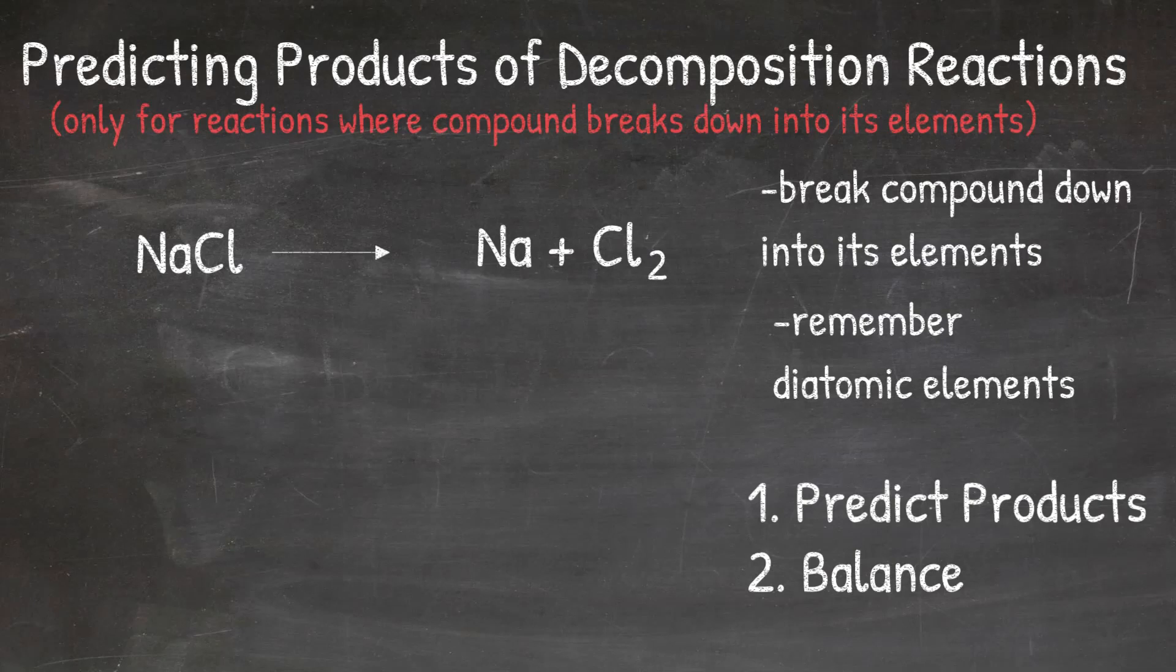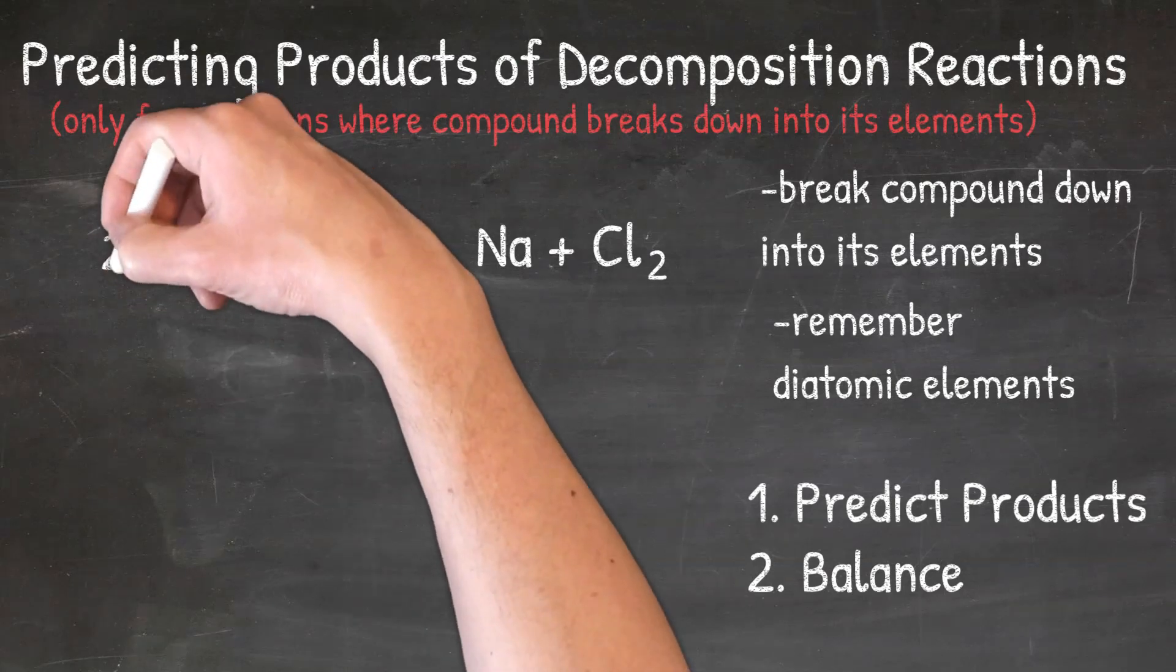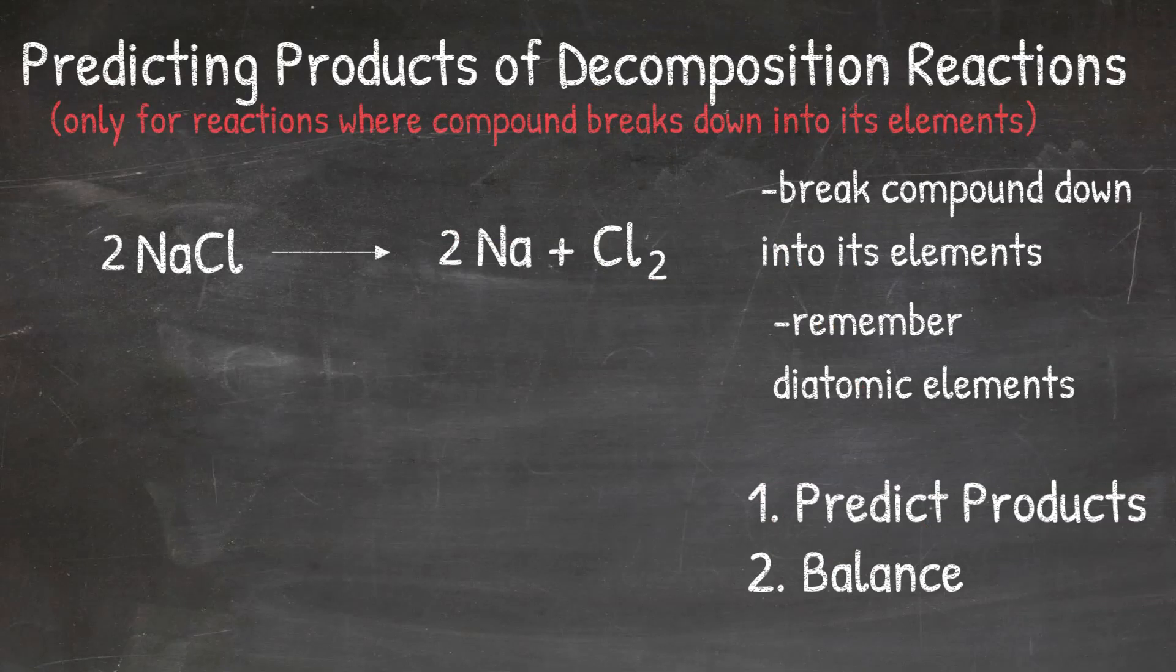Now that I have predicted the products, I can go back and balance by putting a 2 in front of NaCl and then a 2 in front of Na. If you need a refresher on how to balance chemical reactions, I will link that video up top.